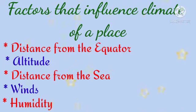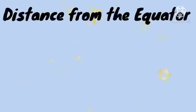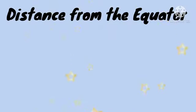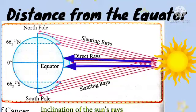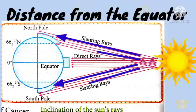In today's class, we will discuss about distance from the equator. The earth gets heated by the rays of the sun falling on it. The rays of the sun fall vertically at the equator and slanting at the poles.